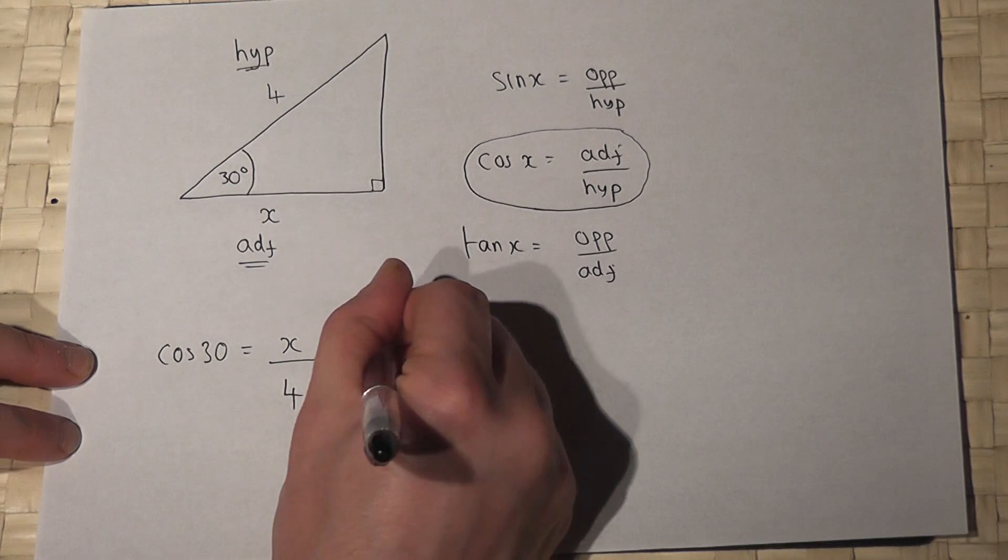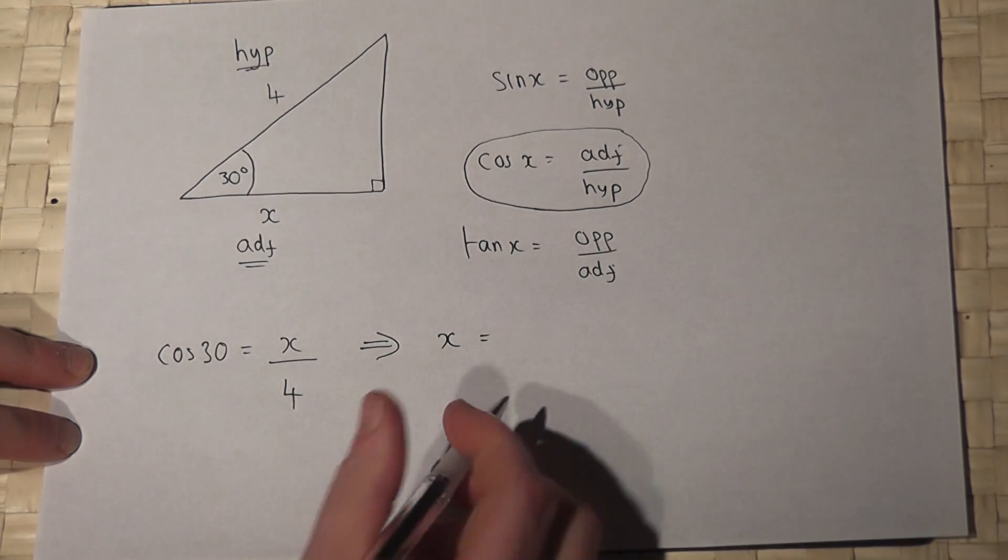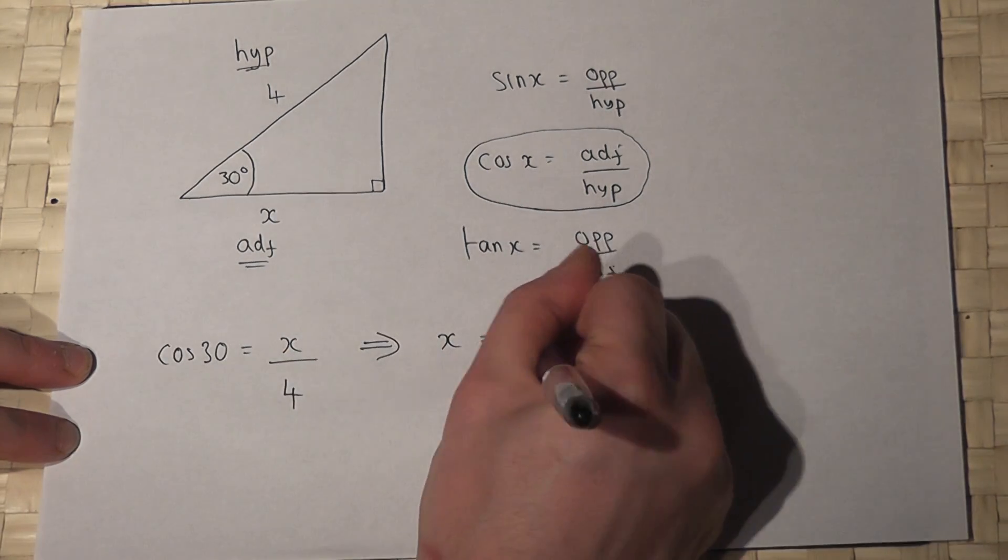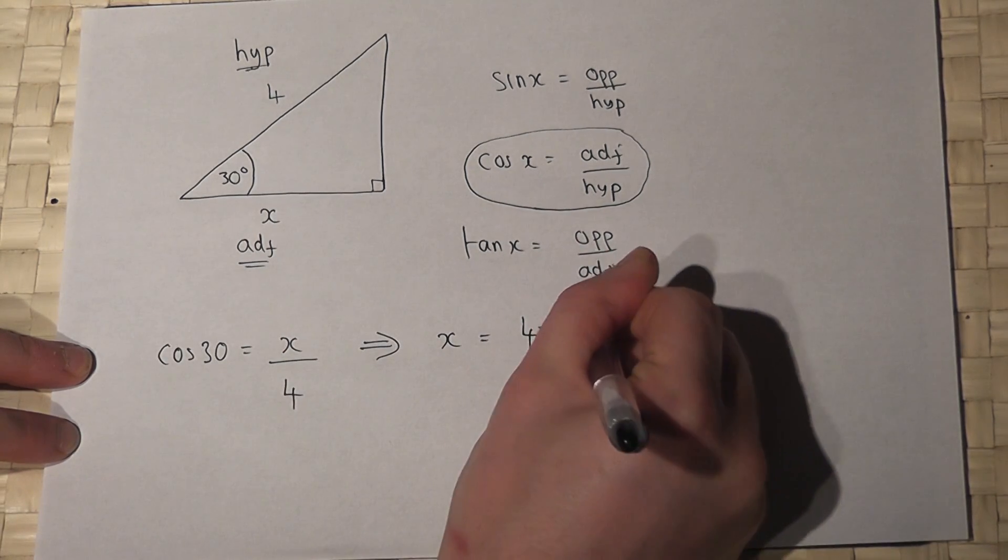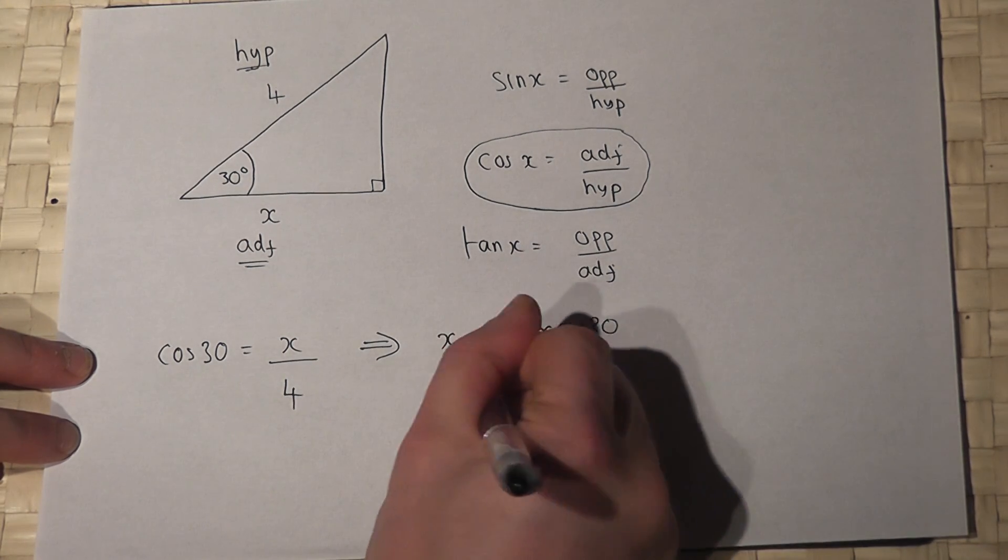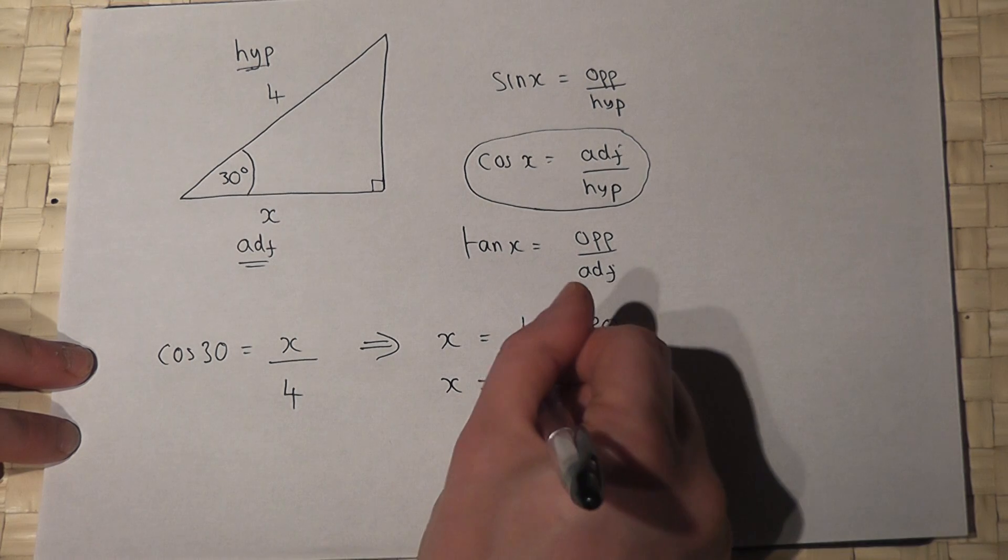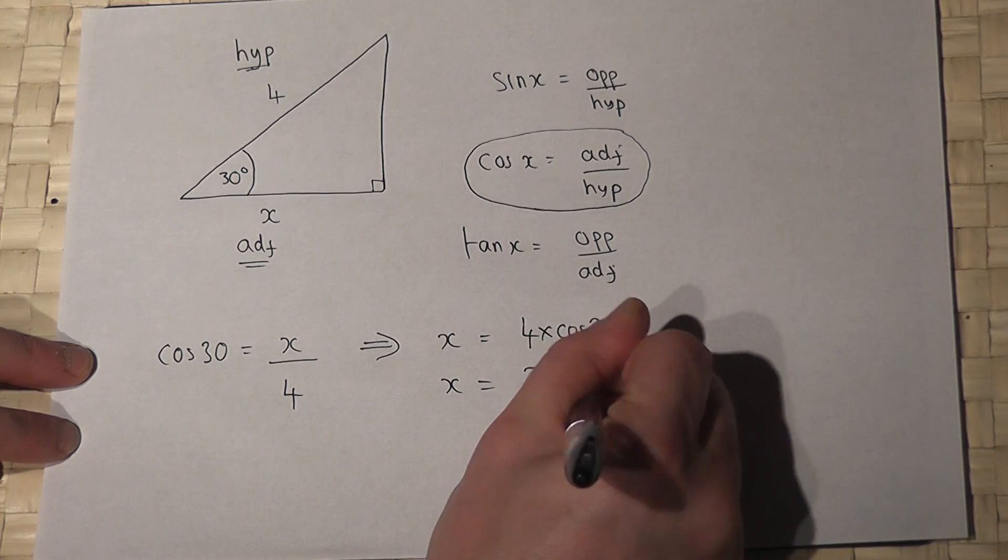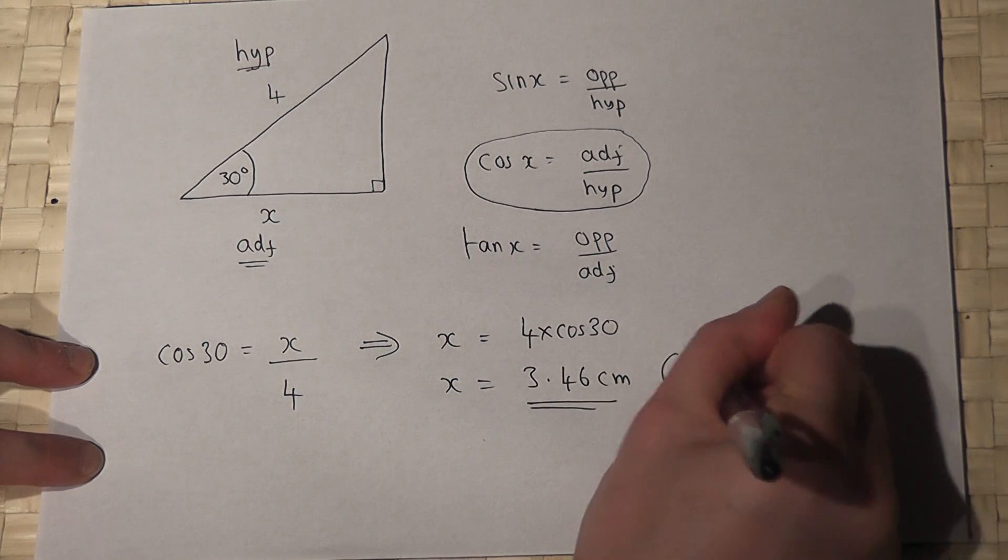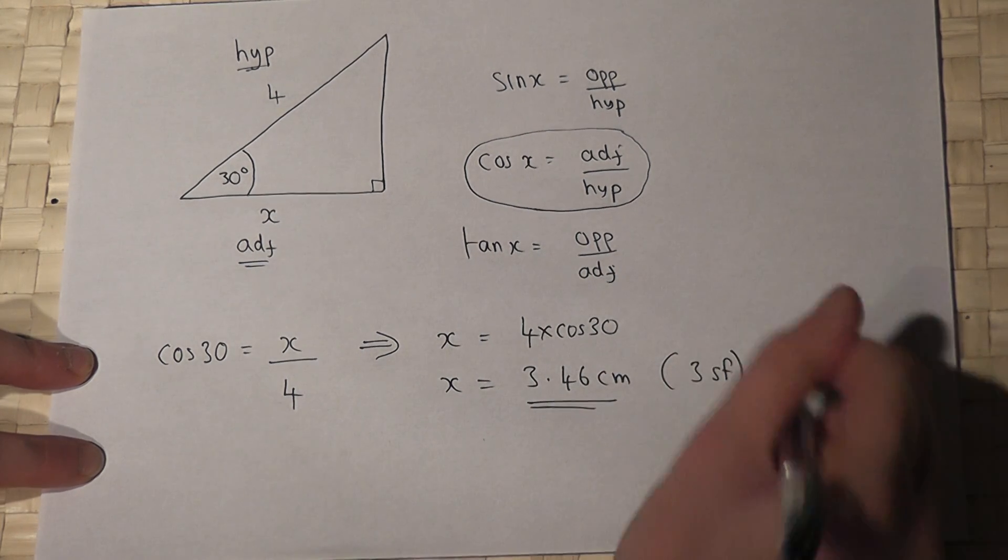So to find x I just have to do 4 lots of cos of 30. I enter that into the calculator. I make sure I'm in degree mode on the calculator and I get 3.46 centimetres, 3 significant figures.